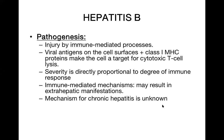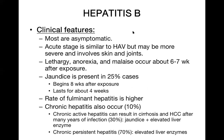Regarding clinical features of hepatitis B: most children are asymptomatic, especially if younger. Acute hepatitis B is similar to hepatitis A but may be more severe and involves skin and joints. If symptomatic, the child may have fever, malaise, headache, anorexia, vomiting, and pain in the right hypochondriac area. Lethargy, anorexia, and malaise occur about six to seven weeks after exposure.